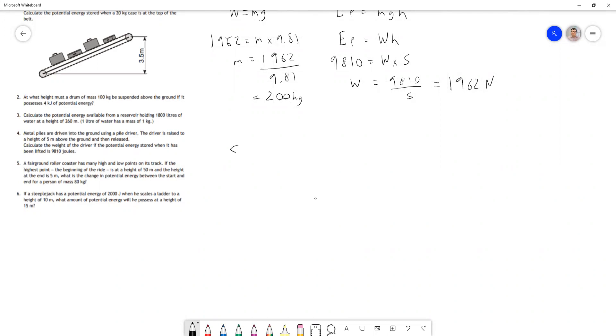Question five: A fairground roller coaster has many high and low points on the track. The highest point at the beginning is 50 meters, and at the end it's 5 meters. What is the change in potential energy between start and end for a pair of mass 80 kilograms? There are two ways to solve this: work out potential energy at start and end and subtract them, or recognize we just need to subtract the two heights.